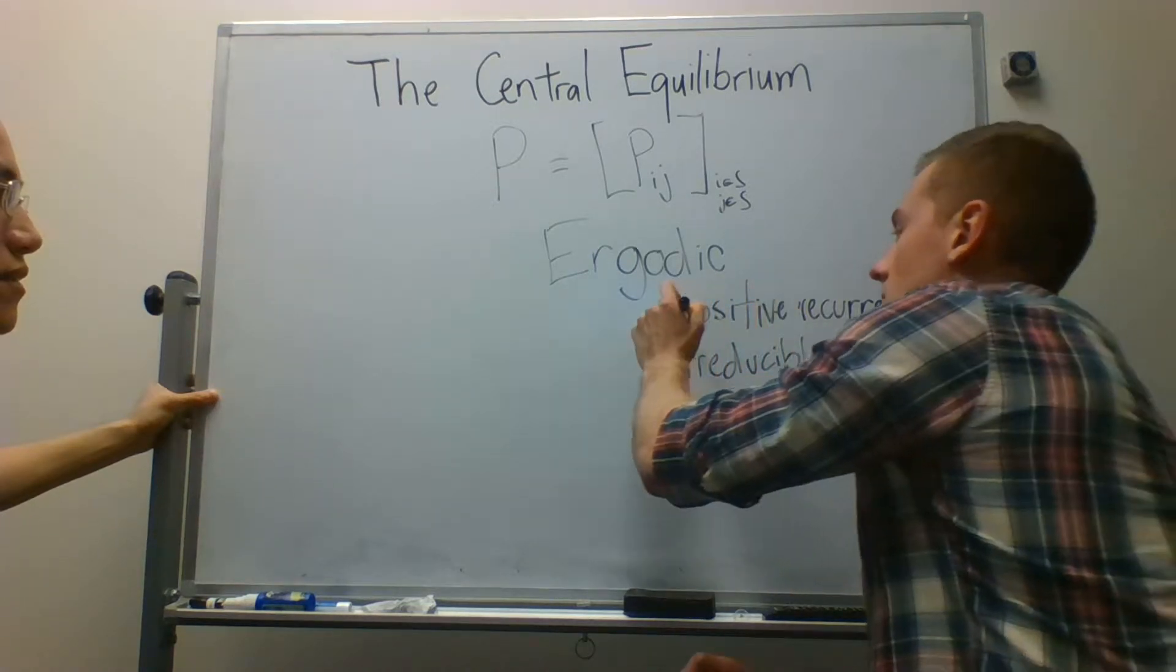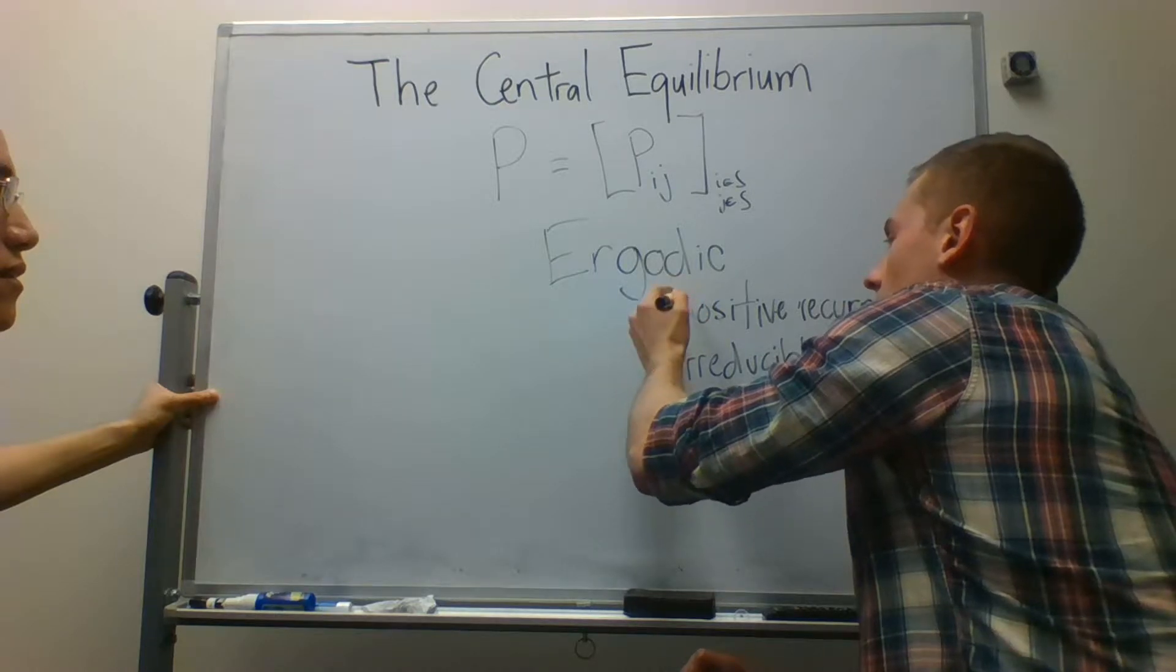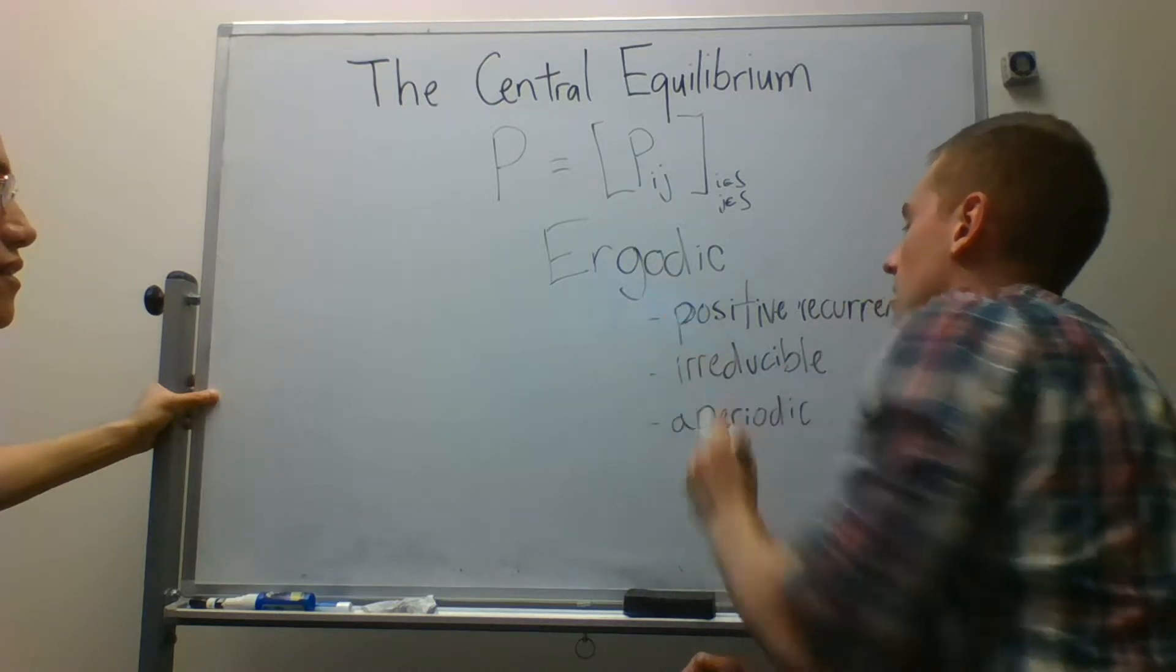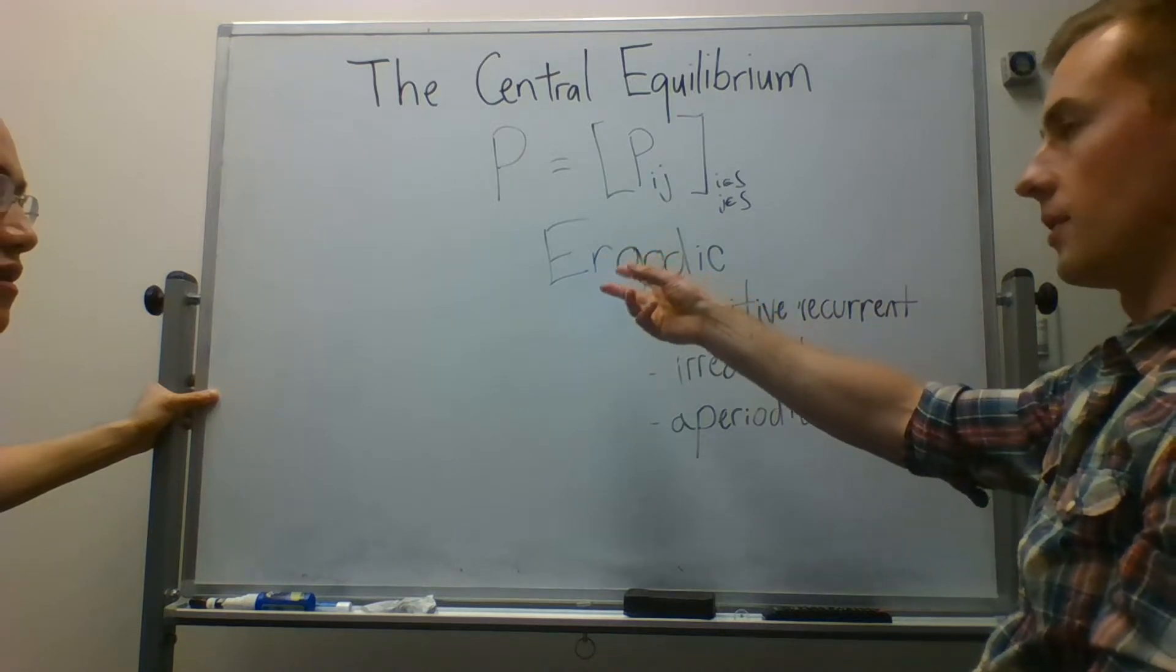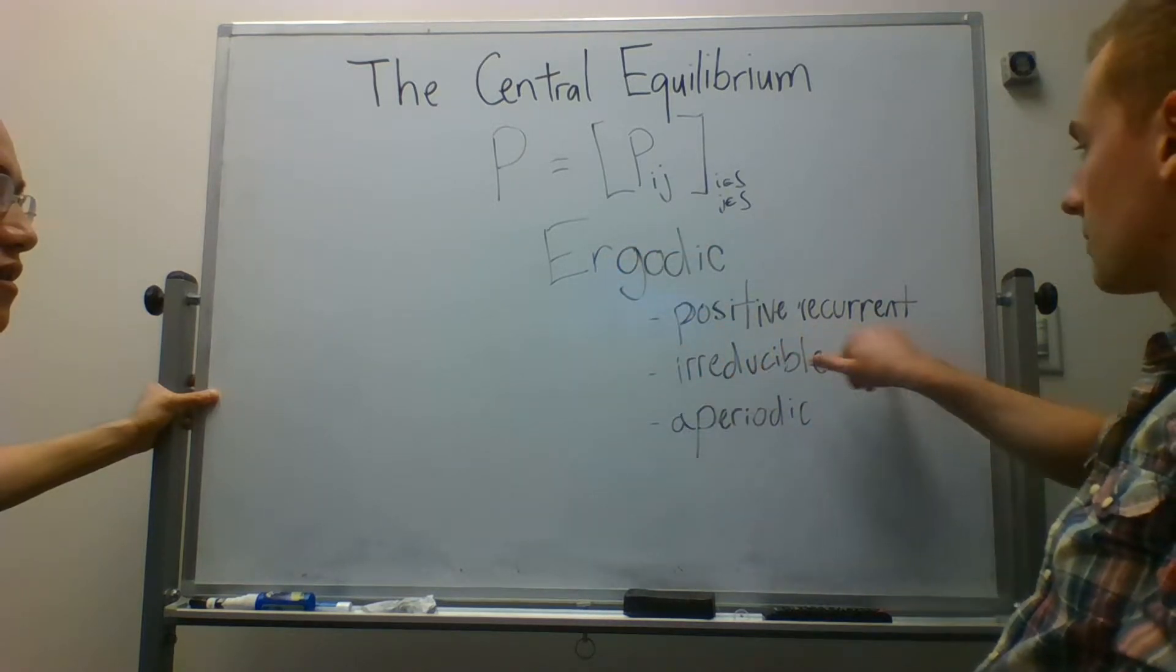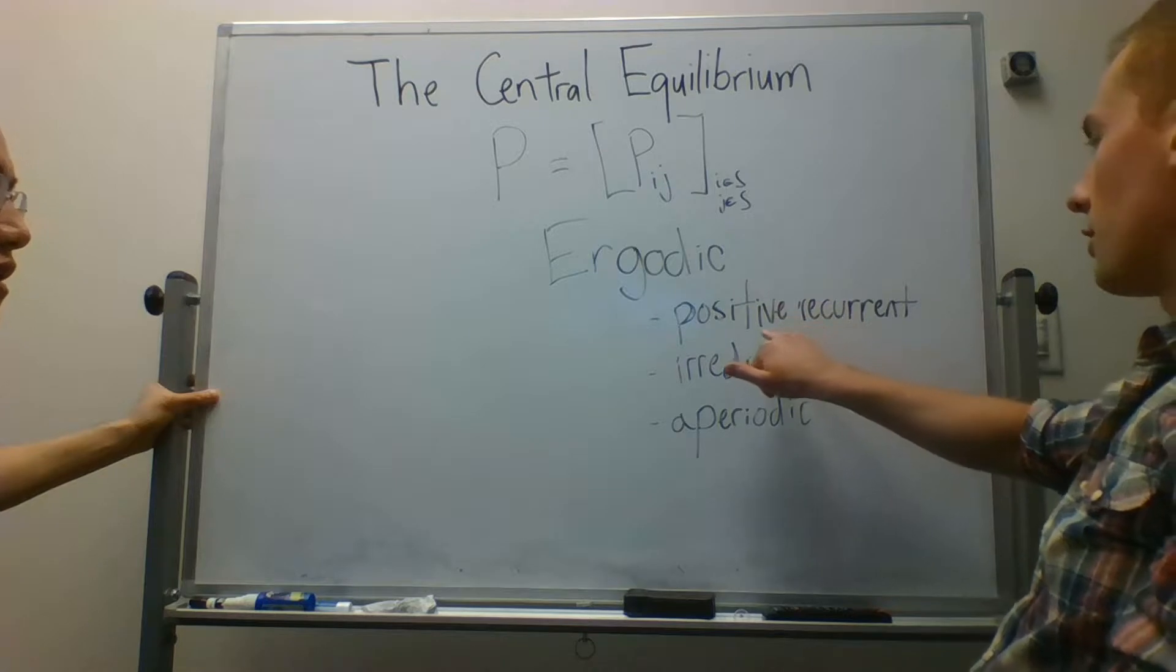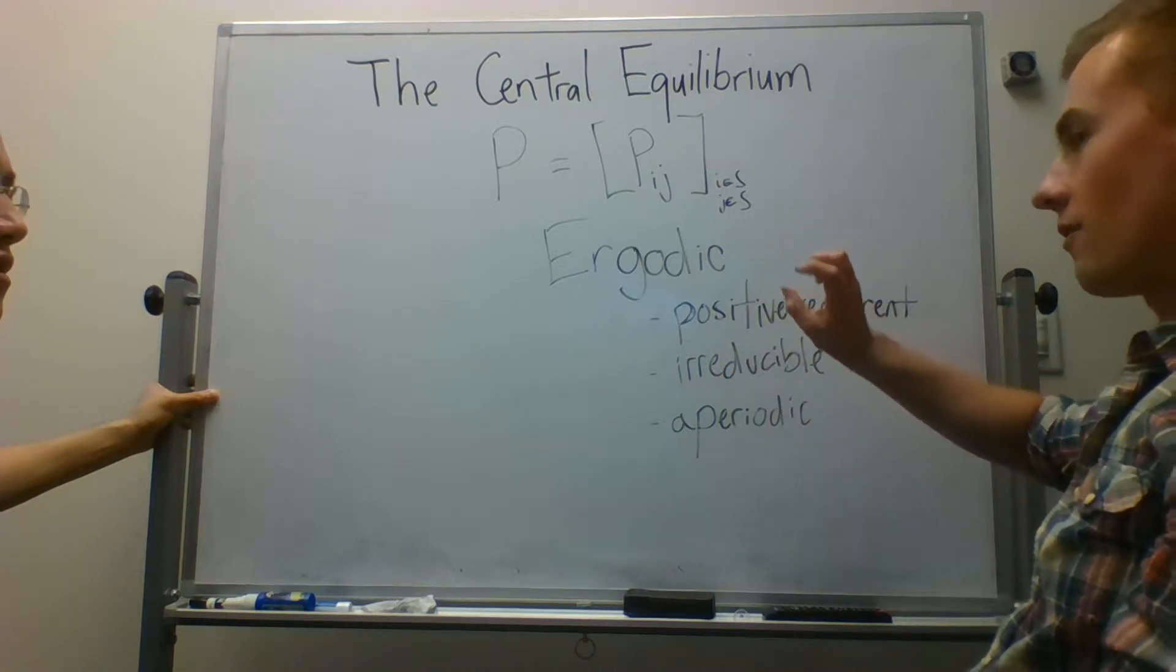It essentially means... I once again erased it when I was trying to think of it. It essentially means that for some n, the probability is positive of returning. And that's specifically the recurrent part. The positive recurrent part modifies that slightly.